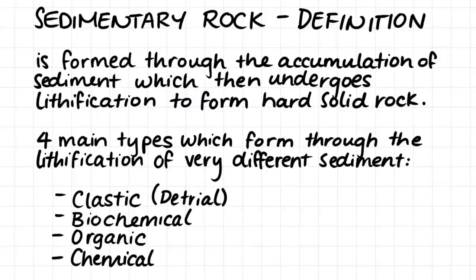Clastic sedimentary rock is made from fragments of weathered rock called clasts. Biochemical sedimentary rock is made up of shells, which are cemented together. Organic sedimentary rock is formed by the accumulation of organic matter, including plants and animals, which are then altered underground. And finally, chemical sedimentary rock is made up of minerals that crystallize and precipitate directly from water.